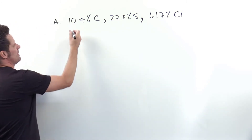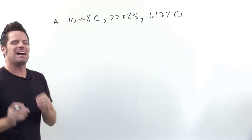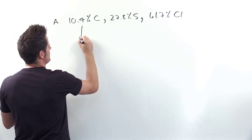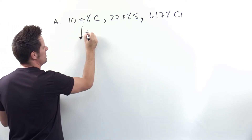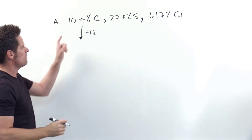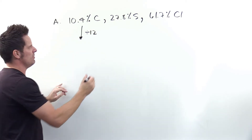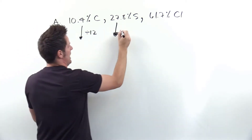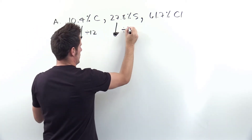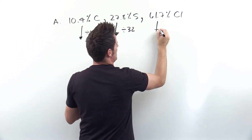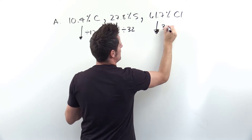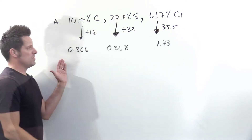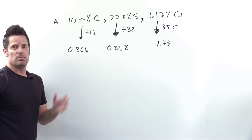Start by taking each percent and dividing it by that element's atomic mass. I like to keep things simple so I'm going to round carbon's to 12 even though technically it's not exactly that, and I take that percent divided by 12. I take the percent for sulfur and divide it by sulfur's atomic weight which is 32. And then I take the percent for chlorine and divide it by chlorine's atomic weight which is 35.5. When I do that I end up getting these numbers here. That's step one: divide all of your percents by the atomic weights of each of their respective elements.